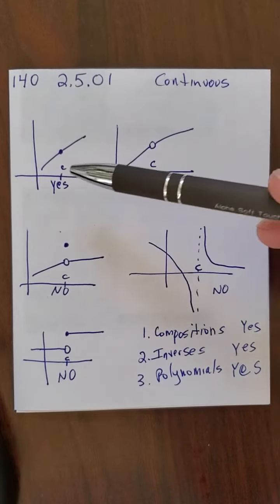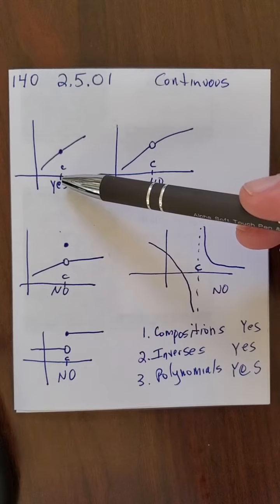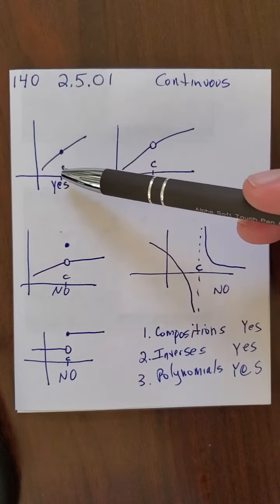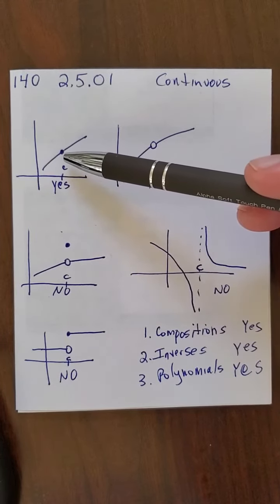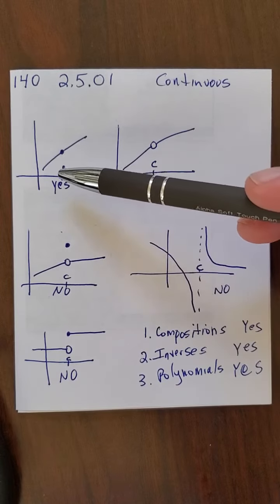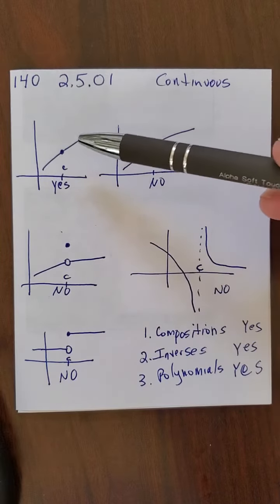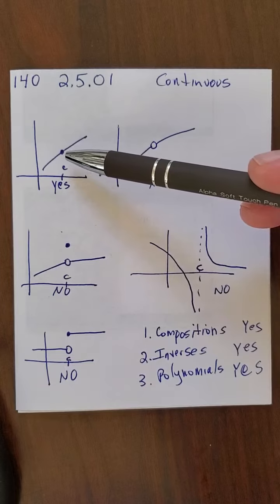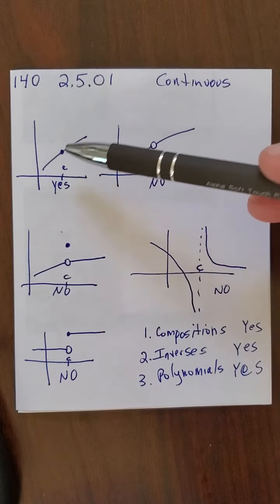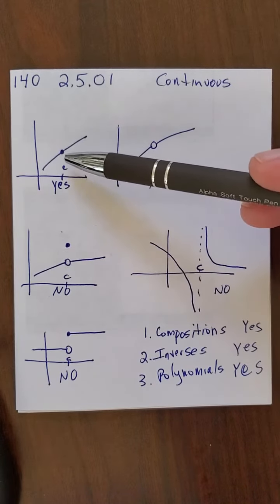One is that the function has to be defined at the point in question. So this function is continuous at the point C, because the function is defined, f of C does exist. The limit as x approaches C exists, and the limit as x approaches C is equal to the value of the function at C.